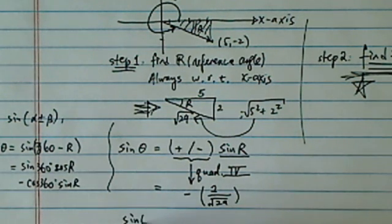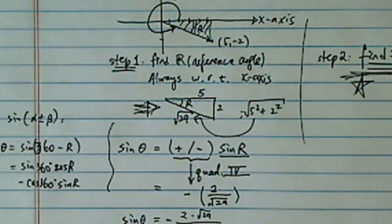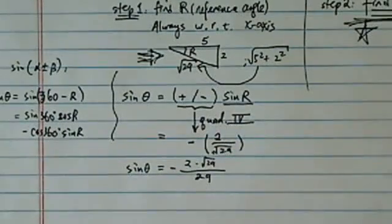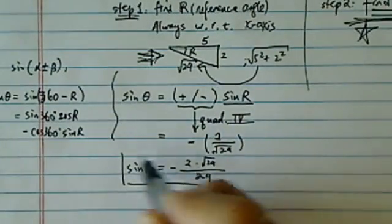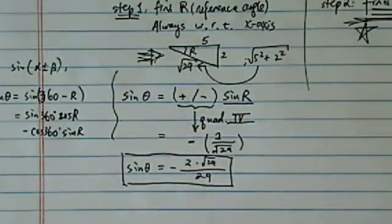So therefore, to clean it up a little better, it's 2 times radical 29 over 29, with a minus sign. That's my sine theta. All I did is rationalize the denominator.